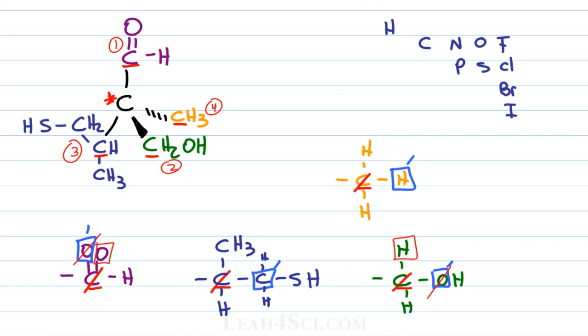The rest is pretty straightforward. Cancel out number four, trace the path from one to two to three and since the top goes to the right or clockwise this molecule is R.